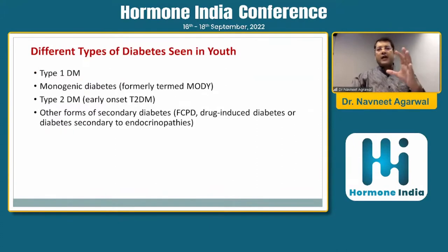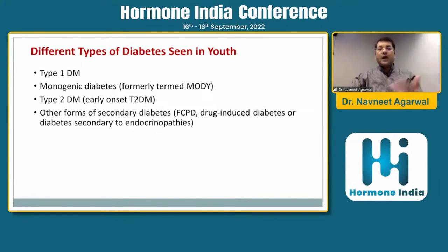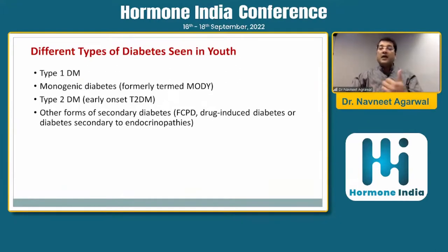The different types of diabetes we see in youth include type 1 diabetes, which we see day in and day out, and monogenic diabetes, initially termed MODY — which was well discussed by my previous speakers Dr. Nihal Thomas and Dr. Arun Pandey. Then we have early onset type 2 diabetes, and other forms of secondary diabetes in young such as FCPD, drug-induced diabetes, or diabetes secondary to endocrine disorders.